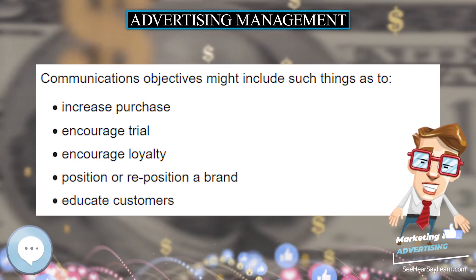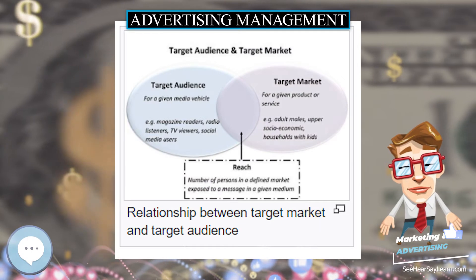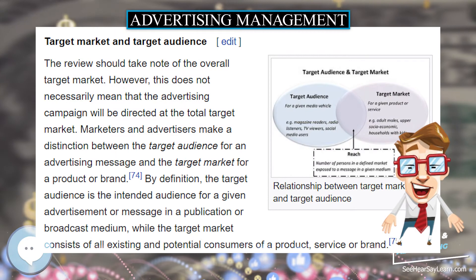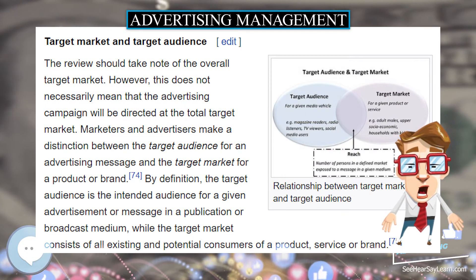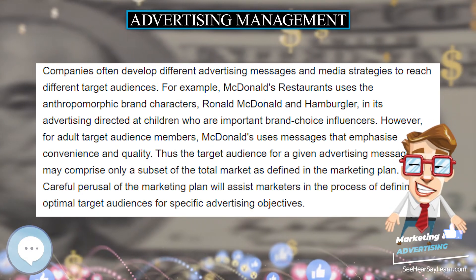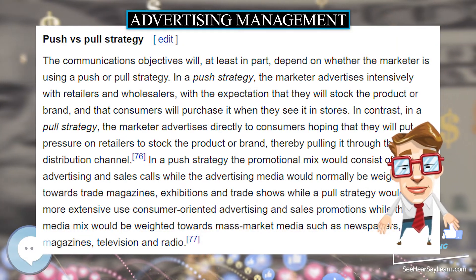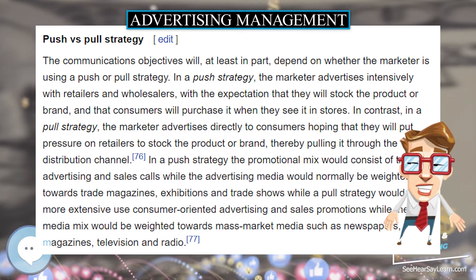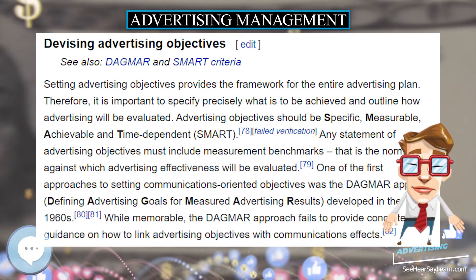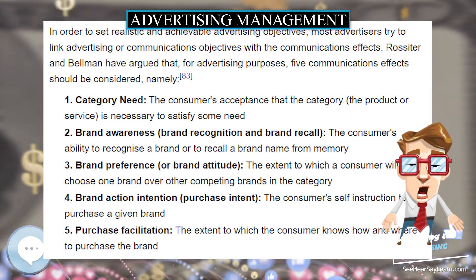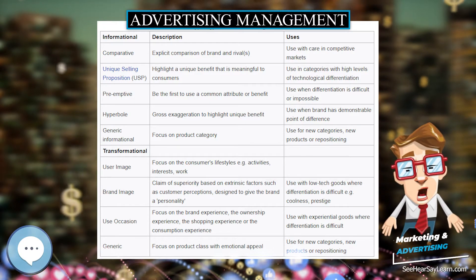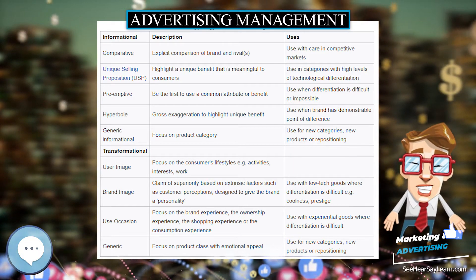The marketing plan provides information about the company's long and short-term goals, competitive rivalry, a description of the target market, products offered, positioning strategy, pricing strategy, distribution strategy, and other promotional programs. All of this information has potential implications for developing the advertising program. The advertiser must study the marketing plan carefully and determine how to translate marketing objectives into an advertising program, as each advertising campaign is unique and requires a great deal of analysis as well as judgment.